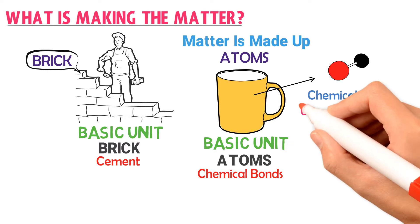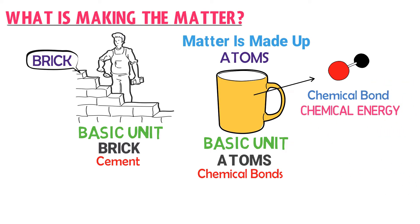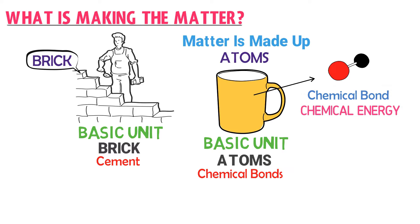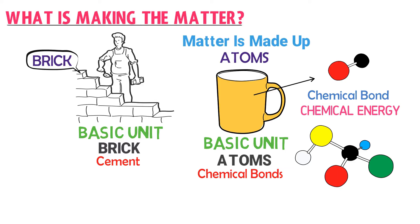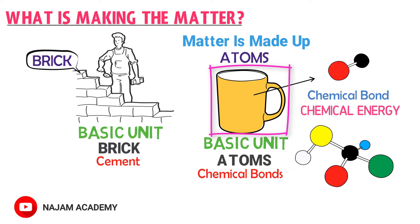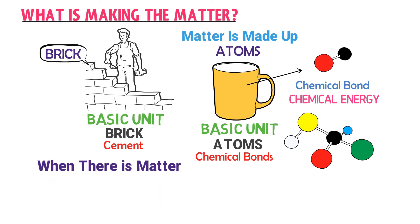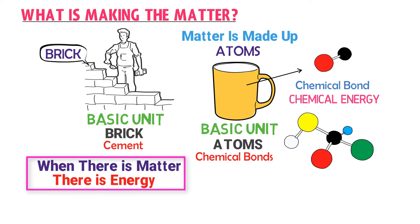Due to this chemical bond, there is chemical energy present. Remember that when there is a chemical bond, there is energy. Now just imagine there are millions of atoms in this cup — thus, there will be millions of chemical bonds. You can think about the enormous energy present between these chemical bonds. Hence, we can say that this matter possesses a large amount of energy due to chemical bonds. Therefore, when there is matter, there is energy.